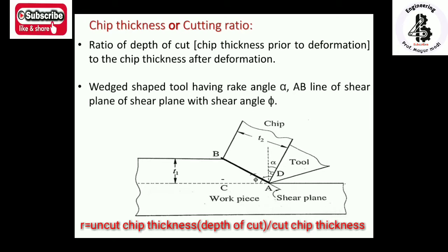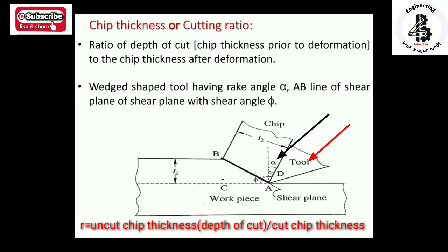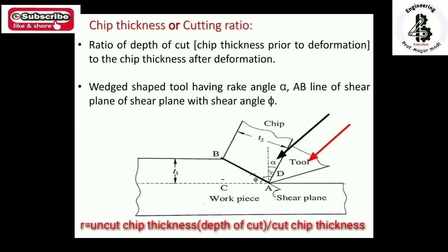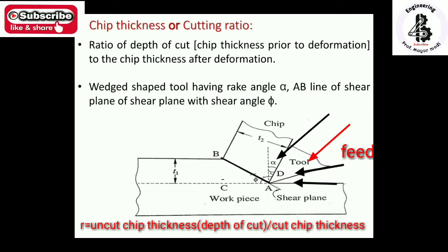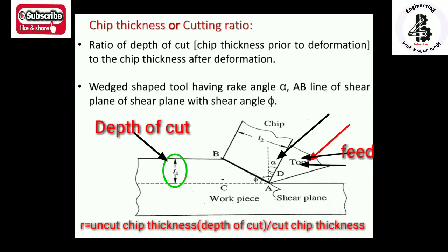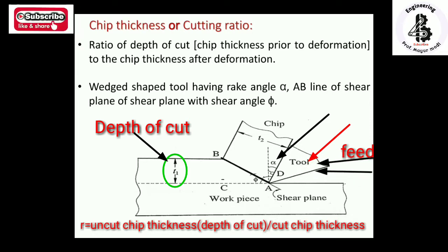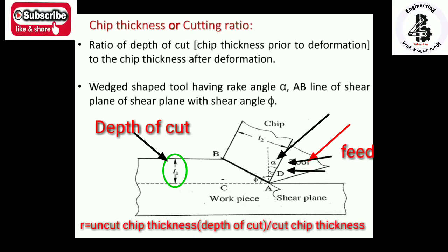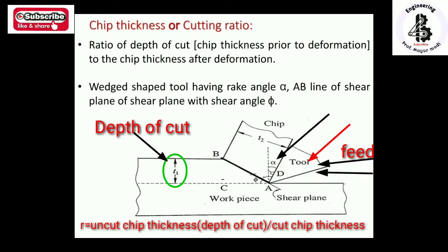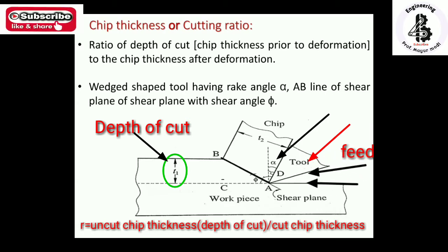In metal cutting operations, a wedge-shaped tool has a rack angle alpha, making an angle with the vertical axis. According to that rack angle alpha, the tool is fed against a workpiece with some depth of cut. Here, t1 indicates the depth of cut, also considered as the uncut chip thickness — the depth of cut applied before the experiment for metal removal.